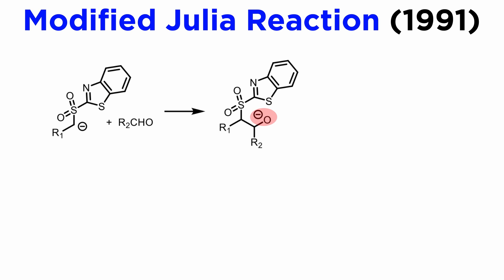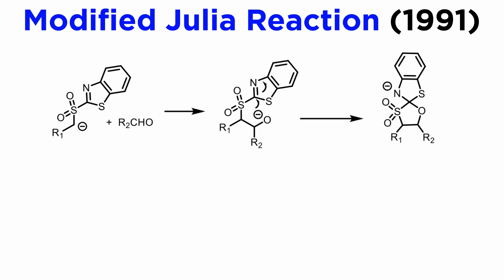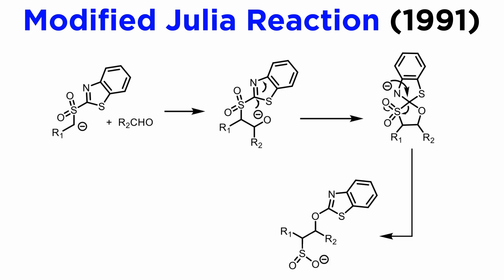The sulfone utilized in this modification bears a benzothiazole group. The primary adduct bears a nucleophilic alkoxy group, which can attack in intramolecular fashion the C=N functionality, formerly an imine, and therefore electrophilic on the carbon. The negative charge on the nitrogen is removed by the breakage of the better leaving group, in this case the sulfonate anion, as the C-S bond is weaker than the C-O bond. This fragmentation process, also referred to as the Smiles rearrangement, yields the alkyl sulfonate.